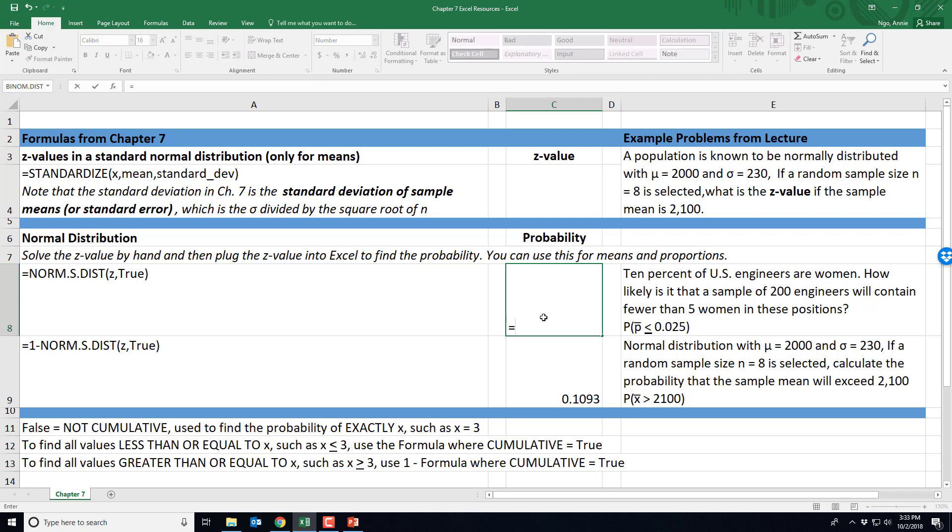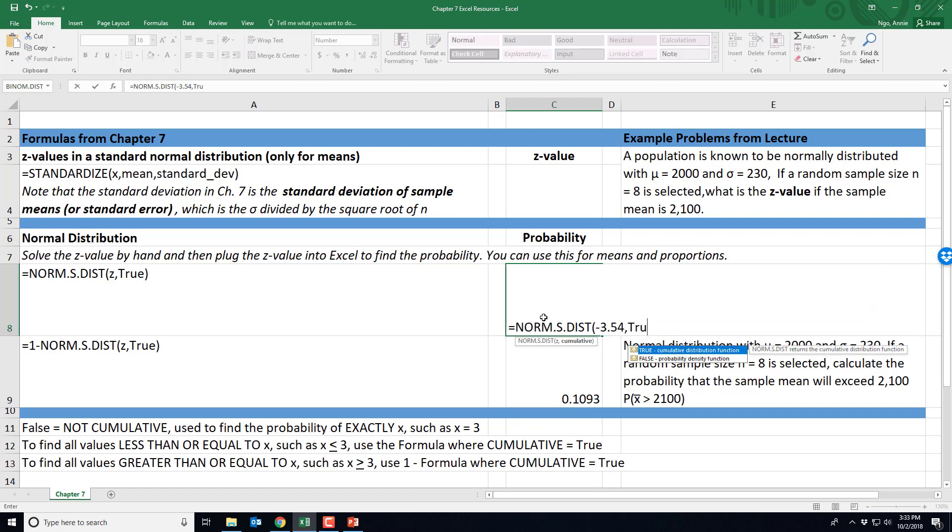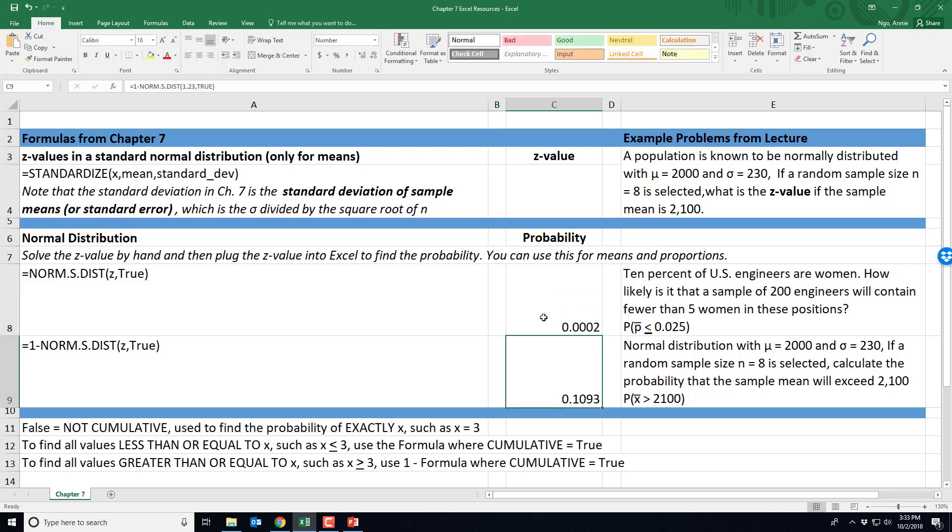So we'll type in equals NORM.S.DIST, parentheses, negative 3.54, comma, true, close our parentheses, and hit enter. And so that probability that fewer than five women engineers are in our sample of 200 engineers is 0.0002.